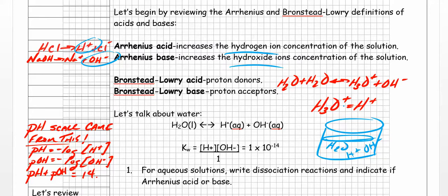I do want you to know that H3O+ and H+ are the same thing. The moment that H+ hits the water, it's going to become H3O+, or hydronium ion. So we can consider H3O+ - called the hydronium ion - and a hydrogen ion to be the same thing.